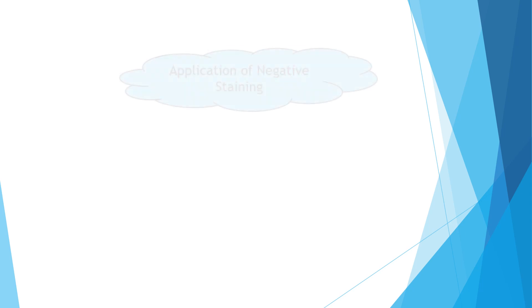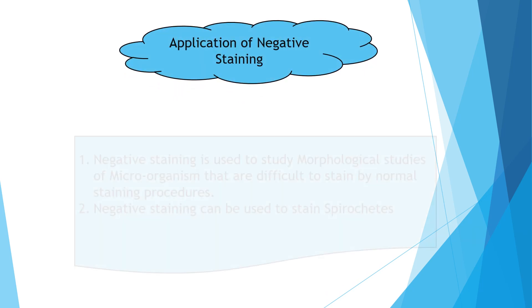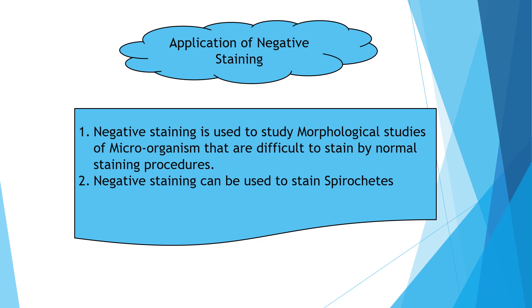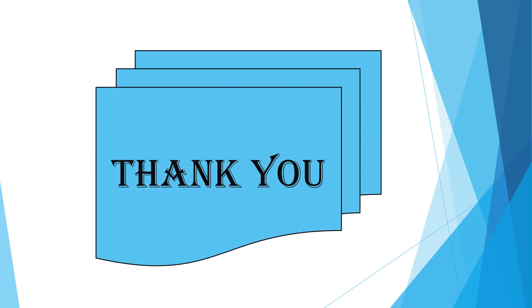Now let's see the applications of negative staining. First, negative staining is used to study the morphological characters of microorganisms that are difficult to stain by normal staining procedures. Second, negative staining can be used to stain spirochetes. These are the two basic important applications of negative staining. Thank you for watching — please like, share and subscribe to my channel.